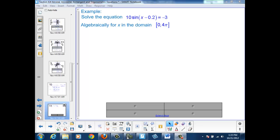So let's start by working our way in towards the x variable. 10 sin(x - 0.2) = -3. First thing I'll do is divide by 10.